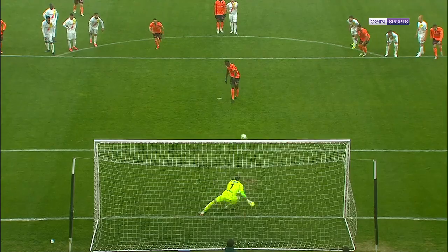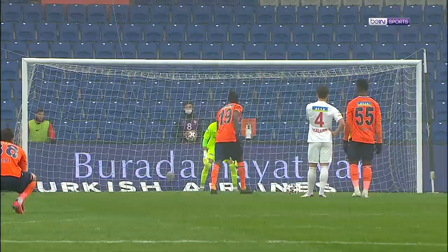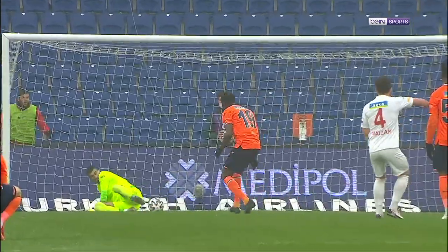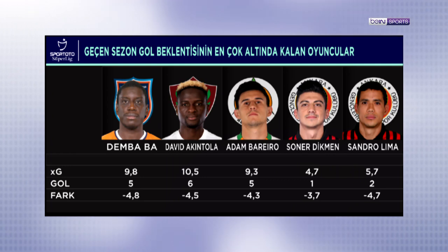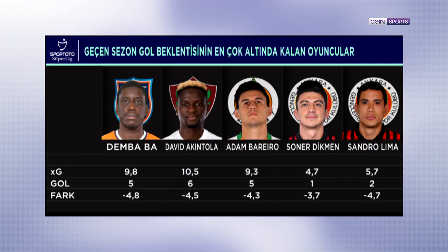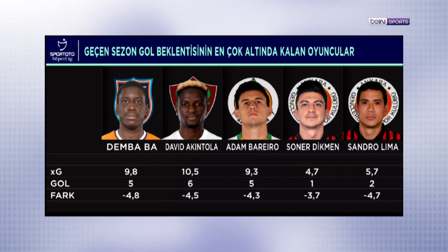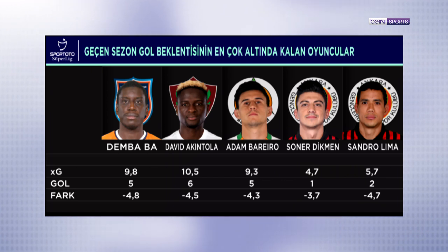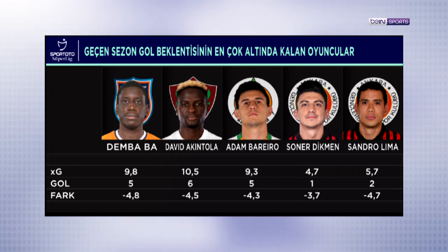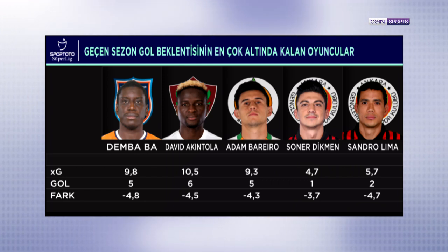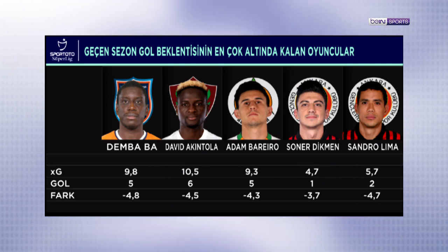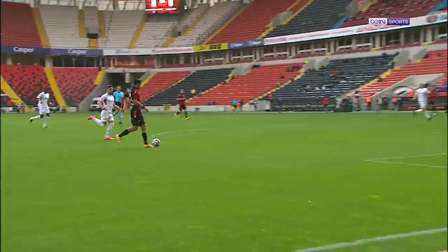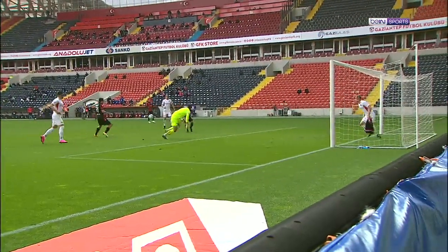Listenin ters tarafındaki isimlere baktığımızda, takımdan sezon devam ederken ayrılması gündemi o zaman işgal eden Dembaba'yı görüyoruz. 10 gol atmasına yetecek şutu çeken Dembaba eğer 5 golde kalmış olsaydı belki başka şeyler konuşulurdu. İki takım arkadaşını listenin iyi ucunda gördüğümüz Akintola da yaklaşık 11 gol beklentisinden bulabildiği 5 golle listenin ters ucunda ikinci. Aytemiz Alanyaspor'dan Barreiro üçüncü. Gençlerbirliği'nden Erdikmen ve Sandro Lima ise belki biraz şanslı olsalar takımlarını kümede tutabilirlermiş gibi gözüküyor.